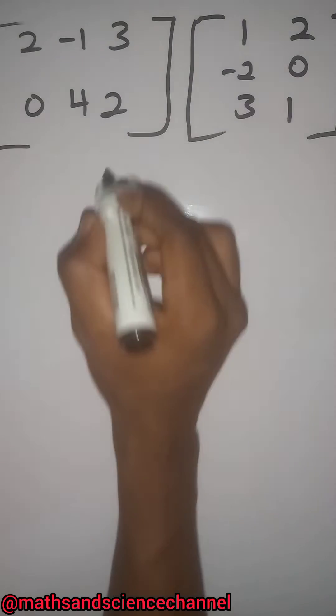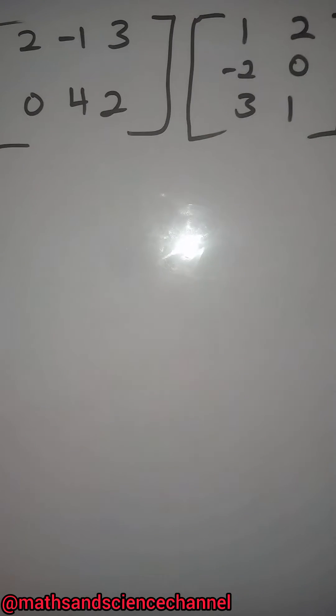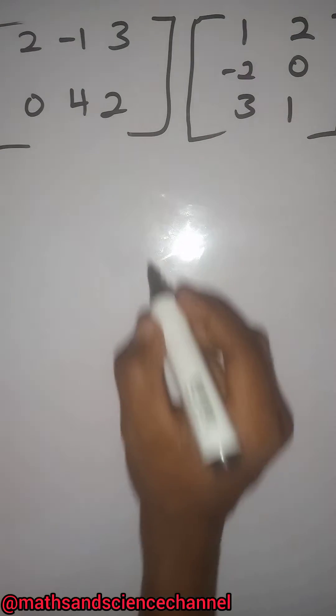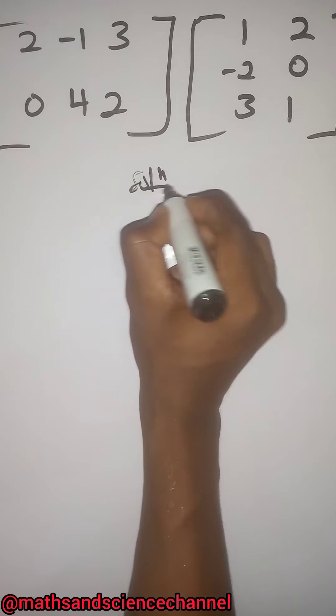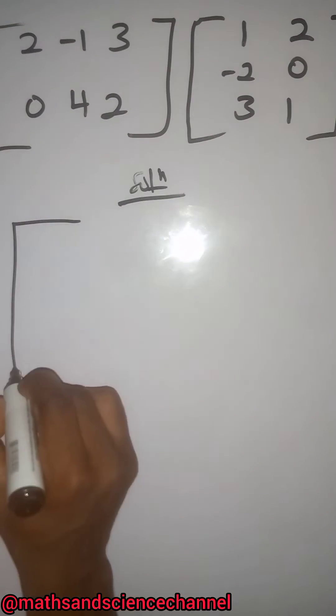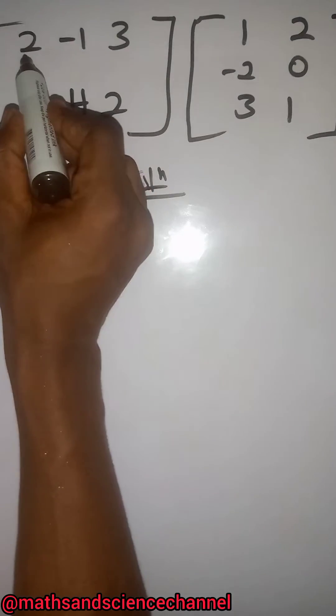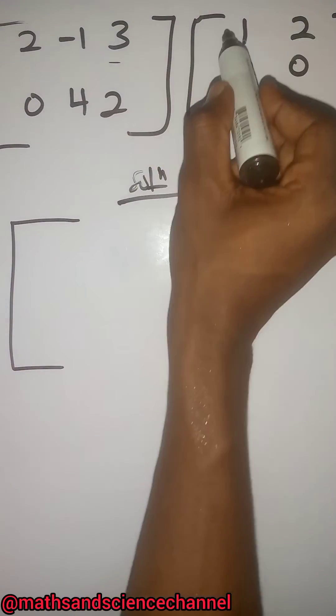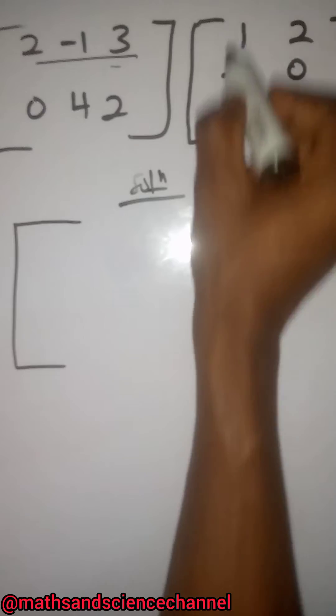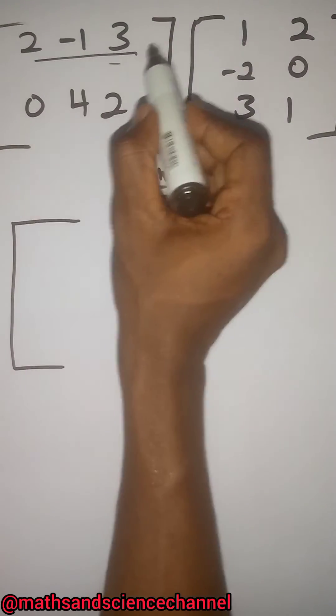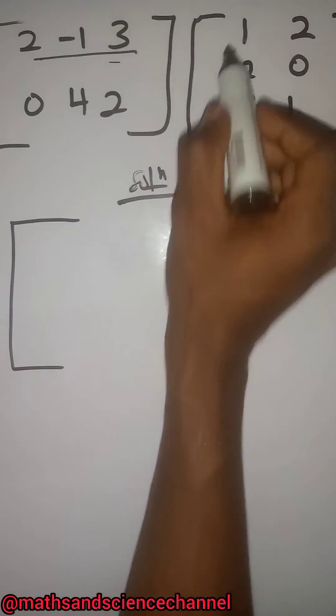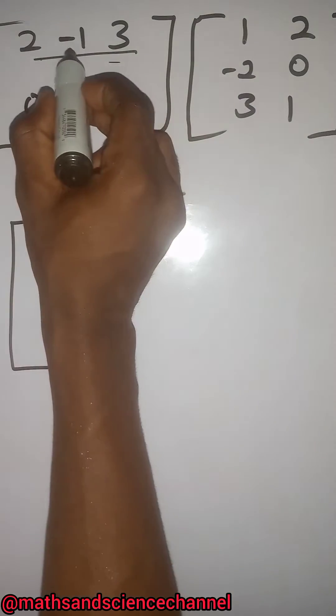So what we're going to do is find the product of these two matrices. Solution: First of all, I always say we use the row multiplied by the column. Always row multiplied by the column. So 2 multiplies 1, we have 2. Negative 1 multiplies negative 2, we have positive 2. We have 3 multiplies 3, which gives us 9.